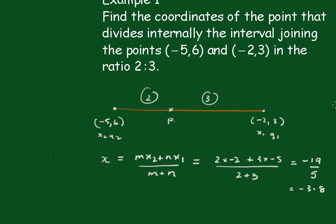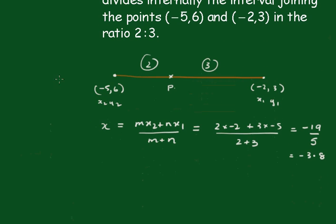Okay, now for the y value. So y = (my2 + ny1)/(m + n).